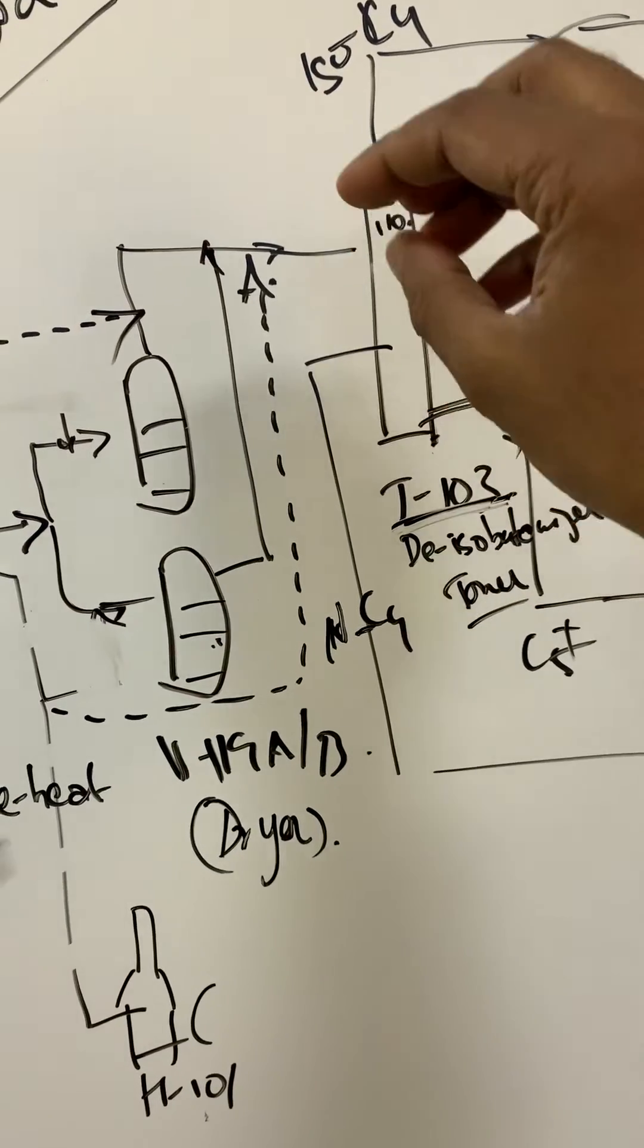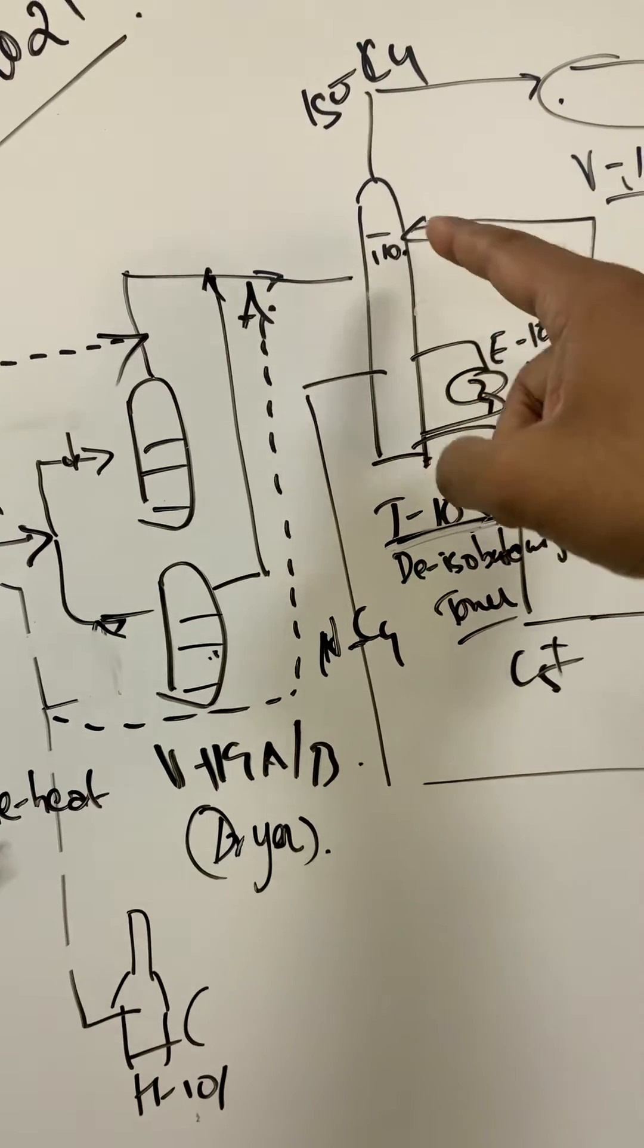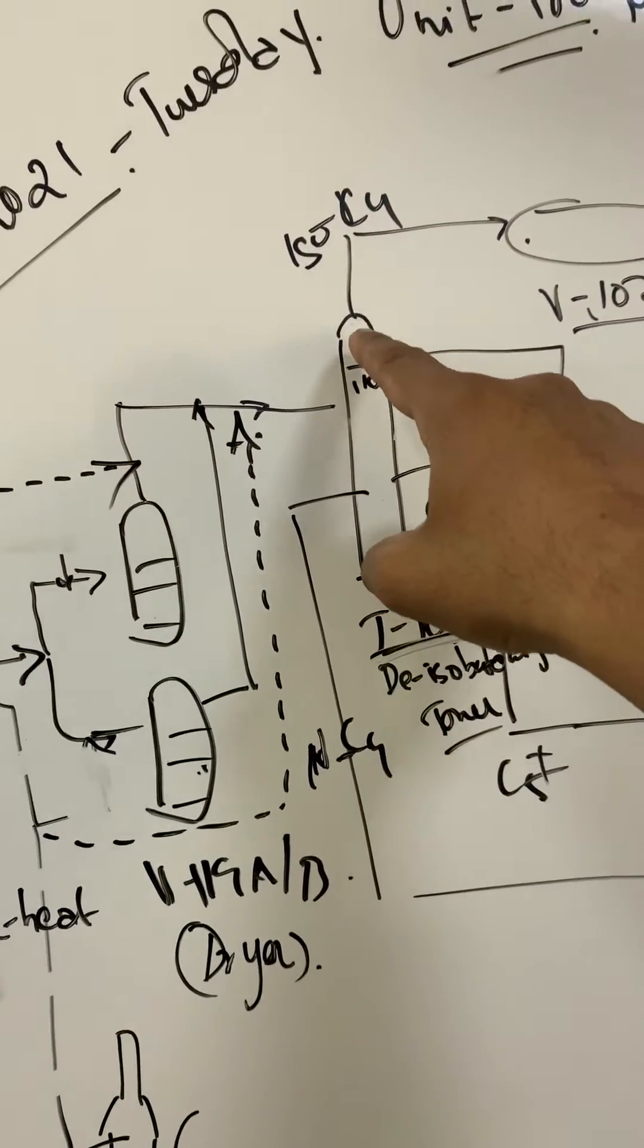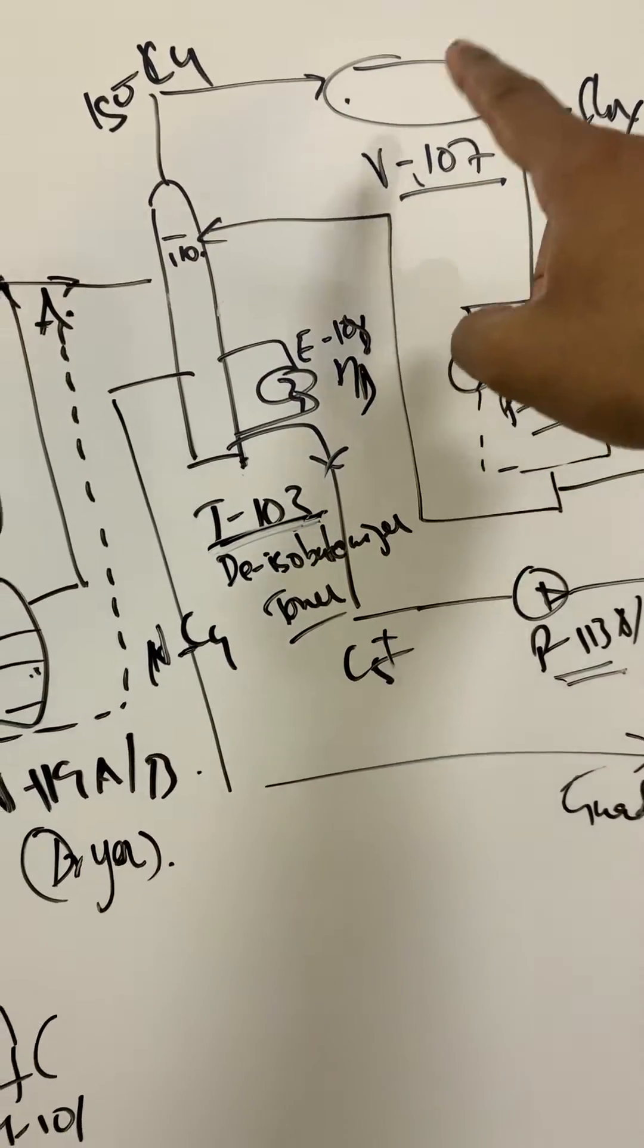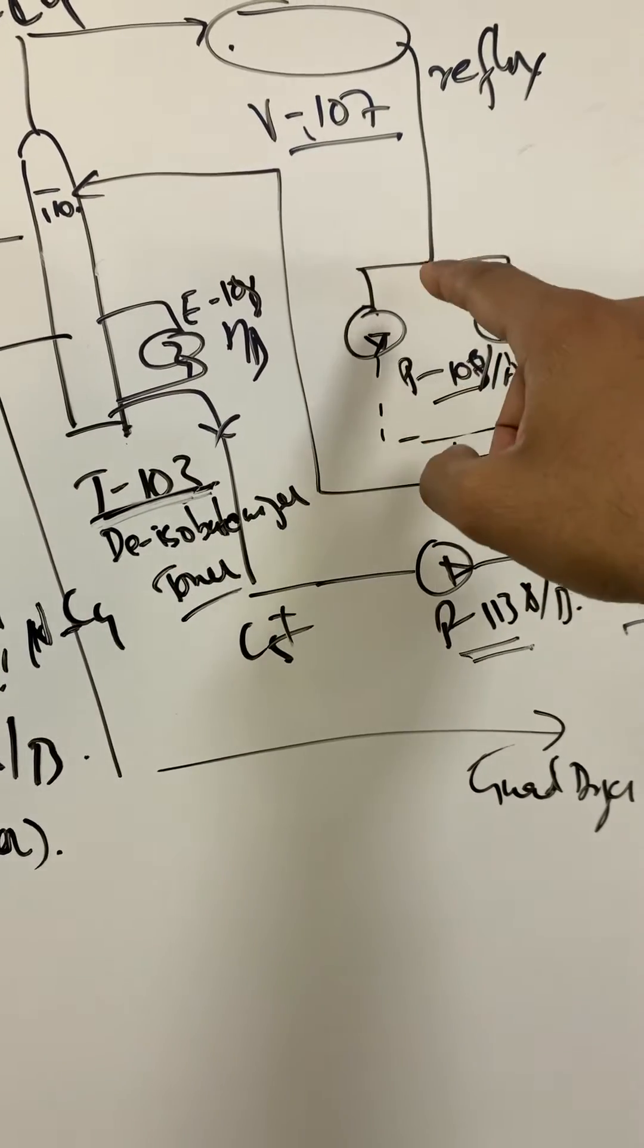The tower has three outputs: on the top, center, and bottom. Top is isobutane, which goes to the reflux drum V107, and then that in turn has a suction bottom, has a suction to the reflux pumps P108 AB.